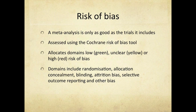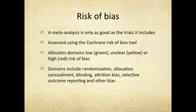Attrition bias relates to differential dropouts in each group. Selective outcome reporting concerns whether authors pre-reported all outcomes specified in a clinical trial protocol. Other bias might include baseline imbalances or pharmaceutical company funding. What you're looking for is a proper assessment of bias in the methods and results — the Cochrane risk of bias tool or similar, along with the traffic light diagram next to the studies. There's a shift away from composite scores like the Jadad score.